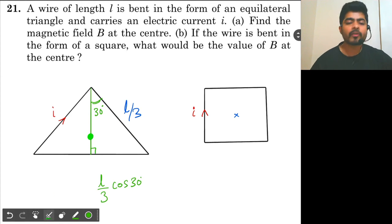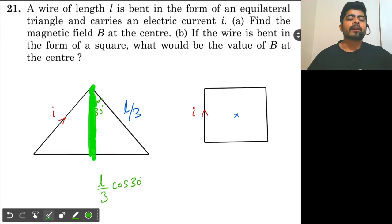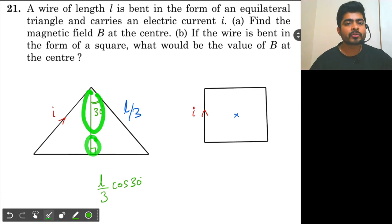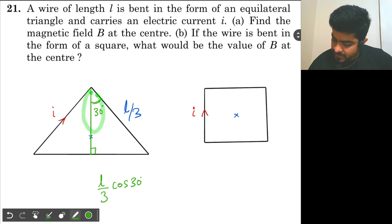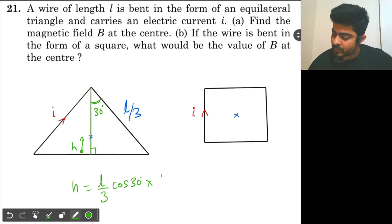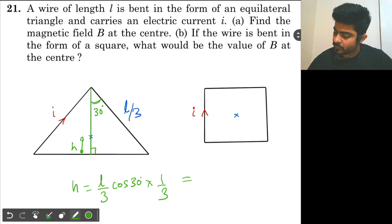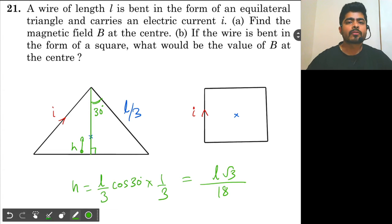This is the centroid of the triangle. The centroid divides the perpendicular in the ratio 1 is to 2. So the height h from the centroid to the side will be one third of L by 3 cos 30, which equals L root 3 by 18.